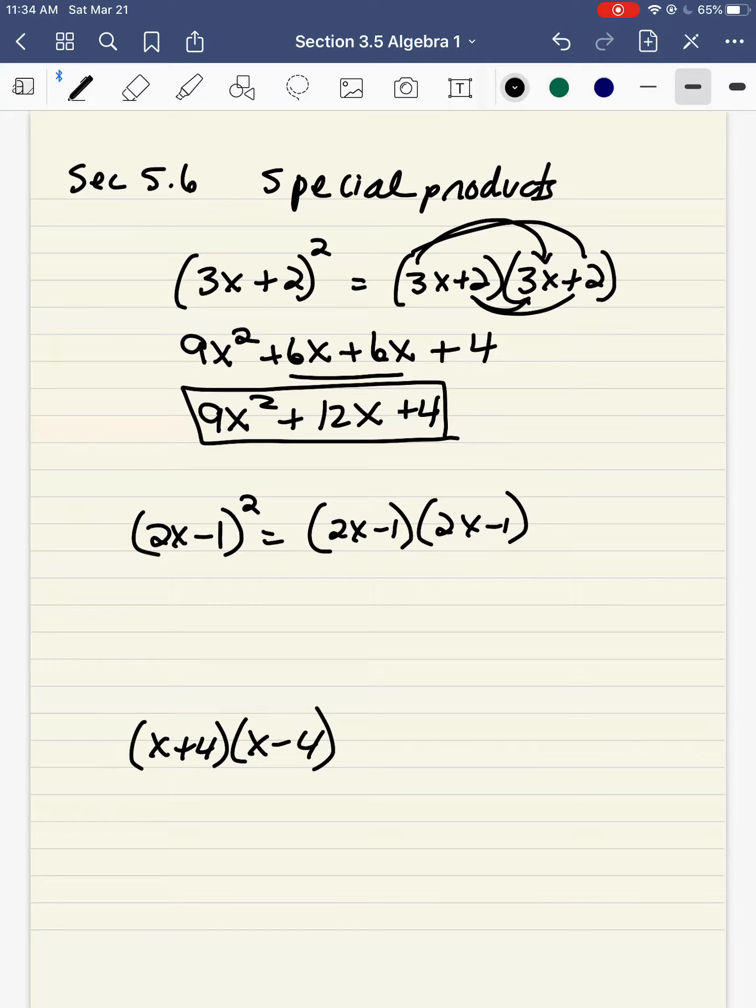2x minus 1, the whole thing squared, is 2x minus 1 times 2x minus 1. So I distribute. 2x times 2x is 4x squared. 2x times minus 1 is minus 2x. Minus 1 times 2x is another minus 2x. Minus 1 times minus 1 is plus 1.